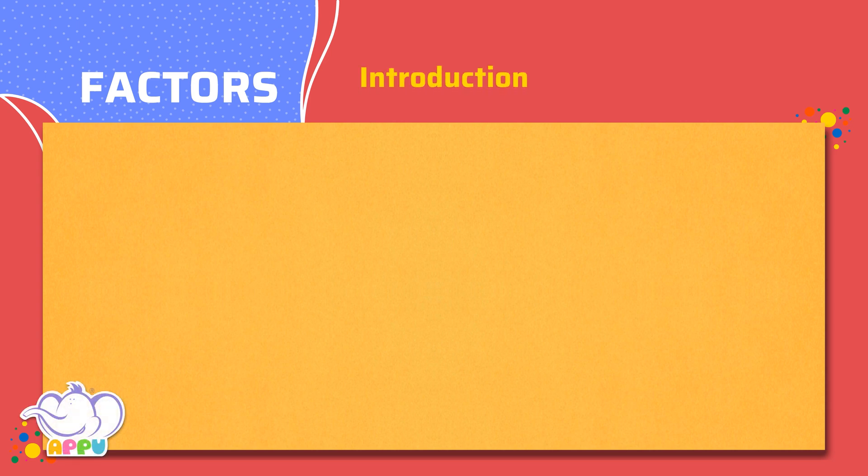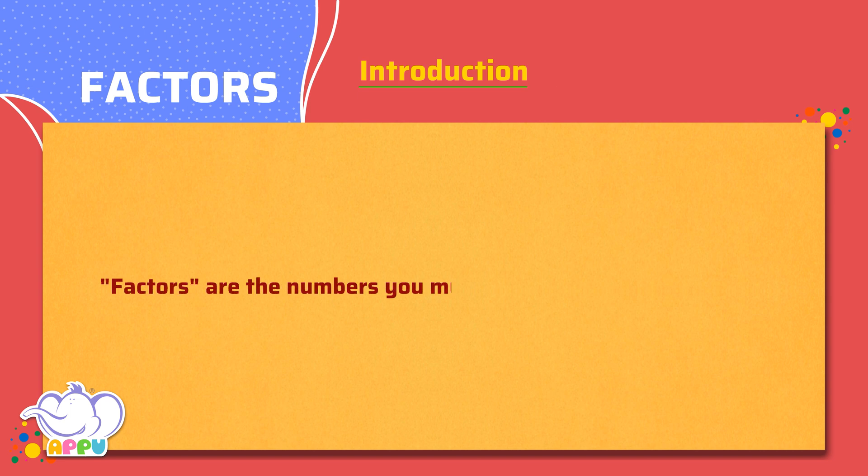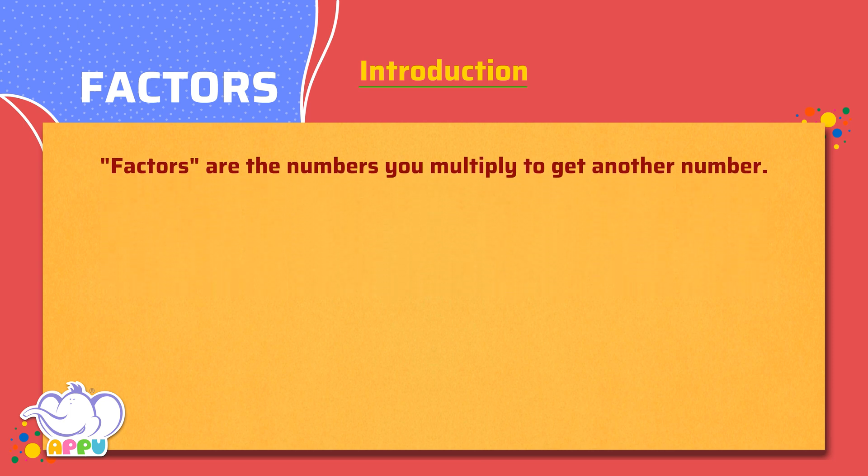Introduction. Factors are the numbers you multiply to get another number. For instance, factors of 15 are 3 and 5, because 3 times 5 equals 15.